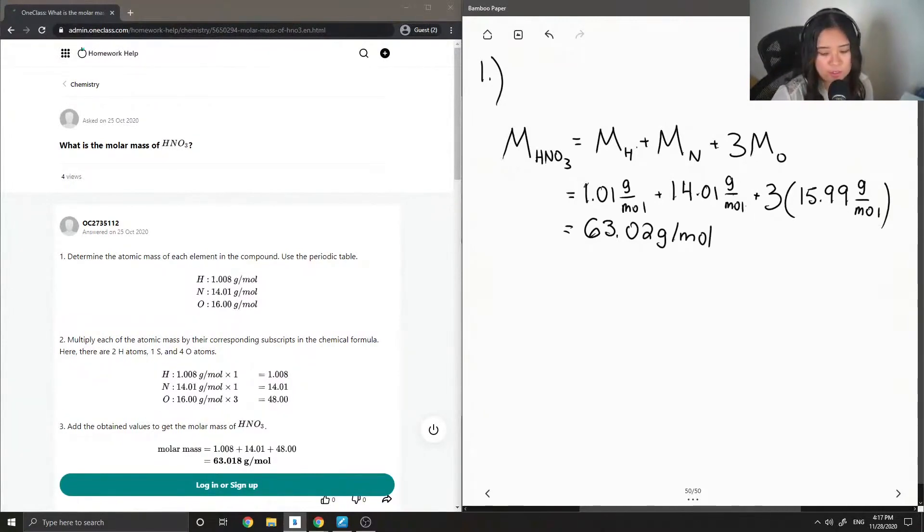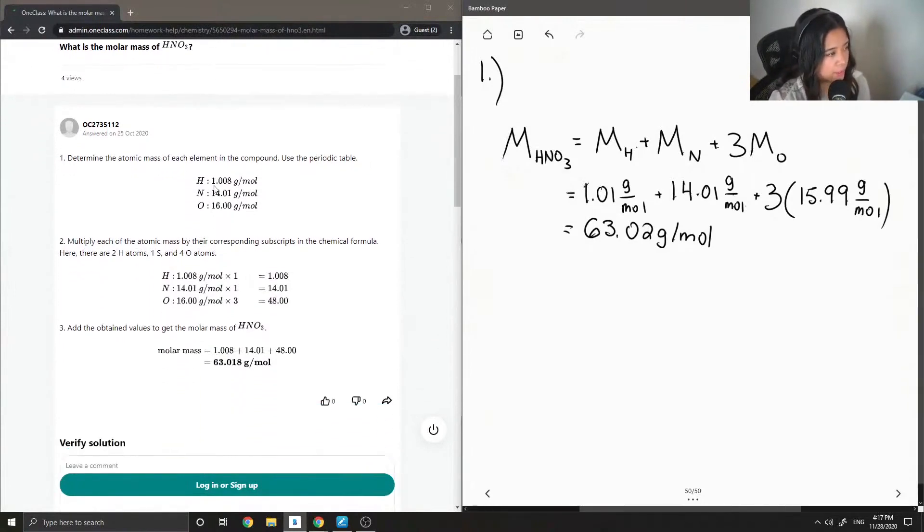So let's see what the junior tutor said. They said step one is to determine the atomic mass of each element in the compound using the periodic table. So they just wrote out all the atomic masses of hydrogen, nitrogen, and oxygen.